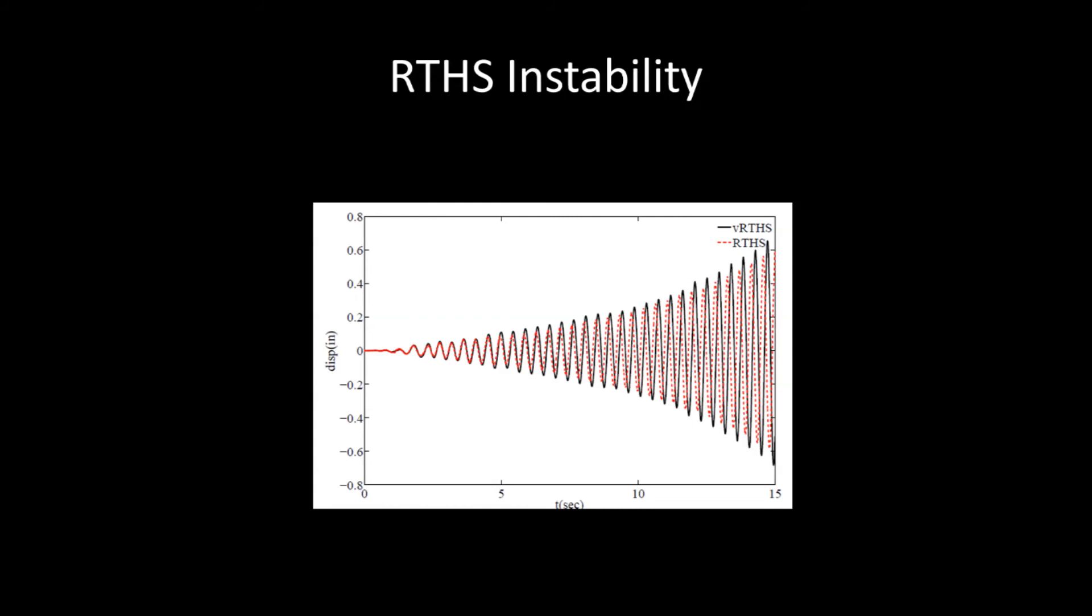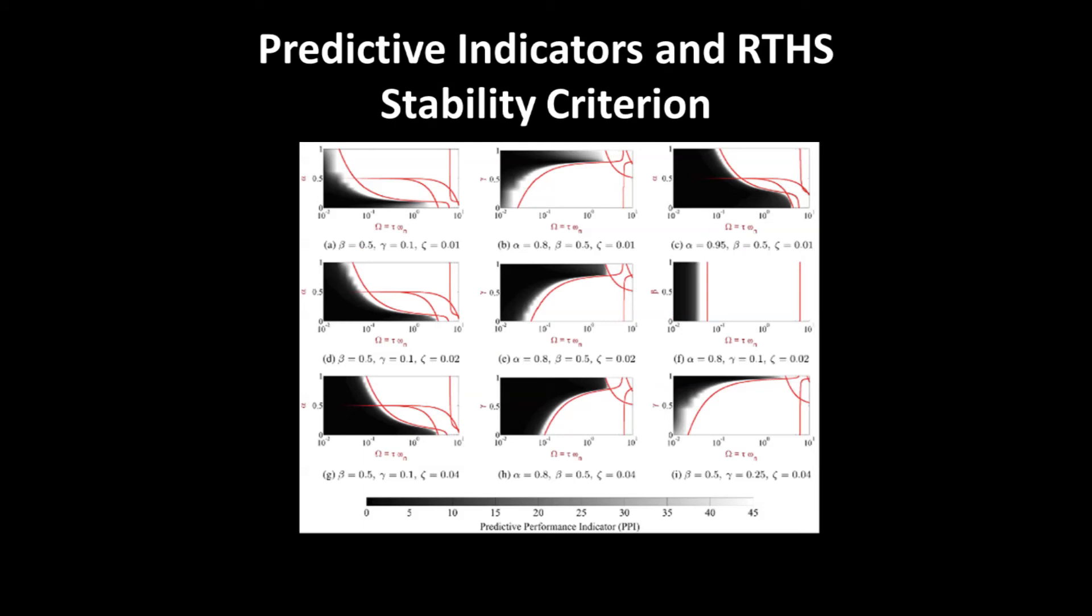This graph shows the execution of an RTHS experiment that has become unstable. As time progresses to the right, the physical displacement of the sliding table continues to increase without bound. This is a safety concern, as it will lead to wild oscillations capable of damaging equipment or hurting people. Our group has developed theoretical stability and performance indicators that allow us to analyze an RTHS experiment in the design stage. These indicators take into account certain characteristics of the physical and computational components and identify safe operating regions.